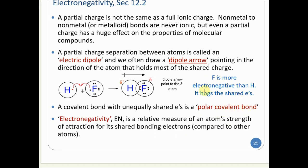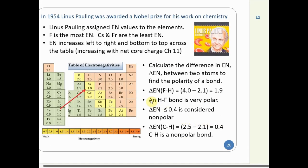Electronegativity (abbreviated EN) is the relative measure of an atom's strength of attraction for its shared bonding electrons compared to other atoms. In 1954, Linus Pauling was awarded a Nobel Prize for his work in chemistry, a good deal of it related to this. Pauling assigned electronegativity values to all elements except the noble gases, since they don't normally form compounds.